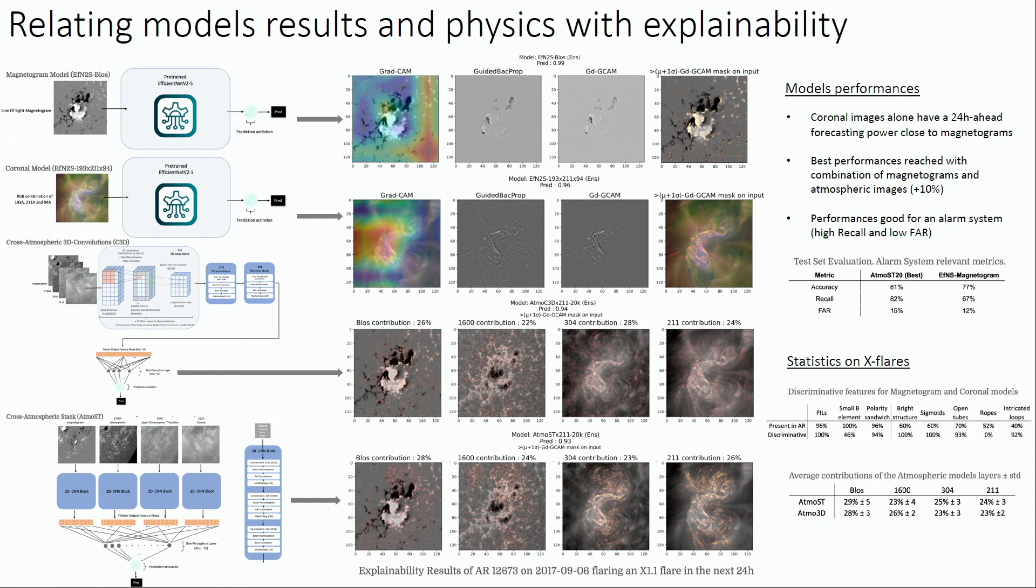And the first interesting result is that the coronal images alone, if we combine them in a specific way, can lead to performances nearly as good as the magnetogram. But this is interesting because it only happens when you combine them. So it could suggest that what's very important for explaining solar flares upcoming in the next 24 hours, maybe it's the relative variation in intensity of the different wavelengths.